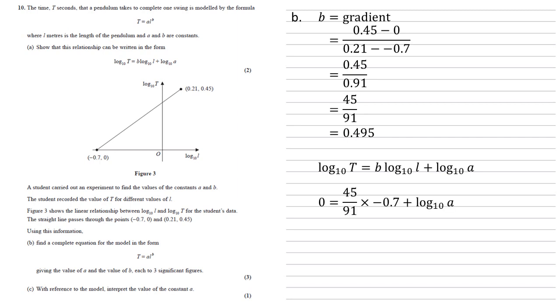So here's our formula. The log base 10 t, I'm going to replace that with a zero. The b is replaced with a 45 over 91 that we've just worked out. And log base 10 l is replaced with a minus 0.7 from our coordinate.